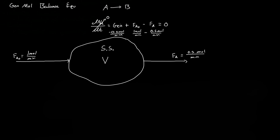This generation term is written as GA — GA represents the generation or consumption of A. At steady state, we must have consumption of A, so GA equals negative 0.5 moles of A consumed per minute. Now let's find the equation for the generation or consumption of A. GA must be related to the reaction rate of A, RA.